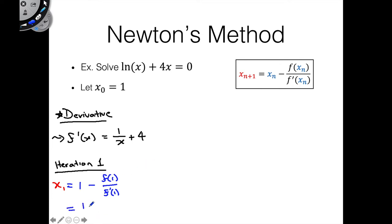This comes out to 1 minus, f of 1, if we plug this in, ln of 1 is just 0, plus 4 times 1 is just going to be 4.